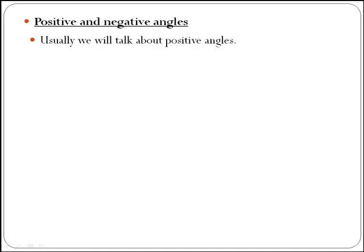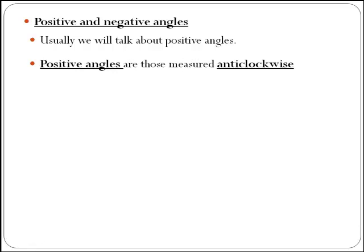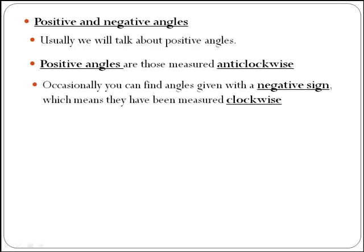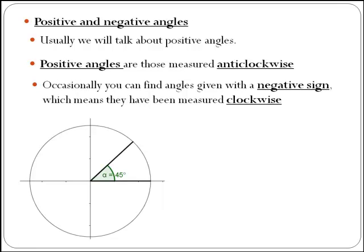As should have happened before when defining a degree, usually when we talk about angles, we talk about positive angles. Positive angles are those measured anticlockwise. Occasionally, you can find angles given with a negative sign, which means they have been measured clockwise. So have a look at this angle. This is an angle of 45 degrees.